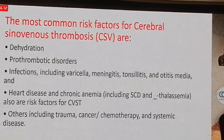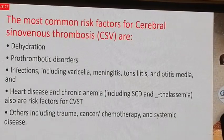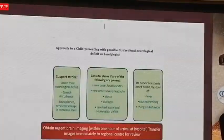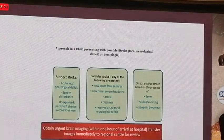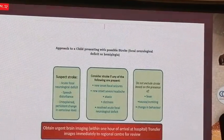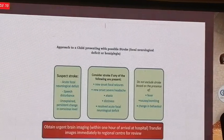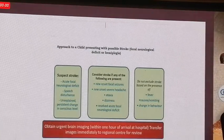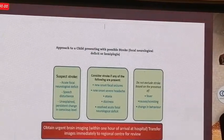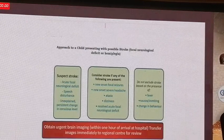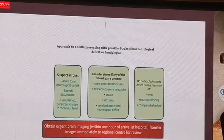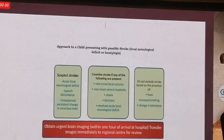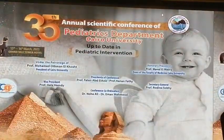The most common risk factors for cerebral sinovenous thrombosis are dehydration, prothrombotic disorders, infections, and heart diseases. When approaching a child with possible stroke, suspect stroke when there is acute focal neurological deficit, speech disturbance, or unexplained persistent change in conscious level. Consider stroke if new focal seizures, severe headache, ataxia, or dizziness are present. Do not exclude stroke based on the presence of fever, nausea, vomiting, and change in behaviour.